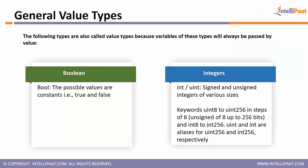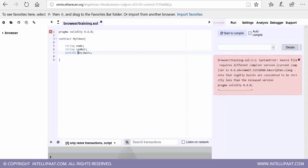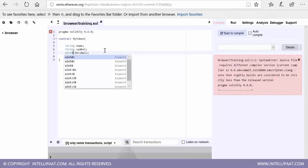The elementary types of Solidity include boolean — declared as bool — which is simply true or false. For integers there are two kinds: signed, declared with int, and unsigned, declared with uint. The size of the integer can range from 8 bits to 256 bits. By default when you declare a variable with uint it is a 256-bit variable. If you want a shorter one you need to qualify it with the exact number of bits.